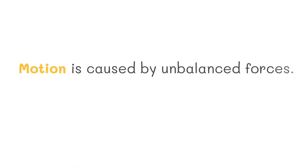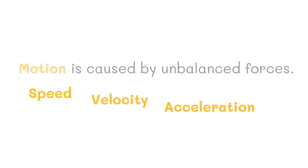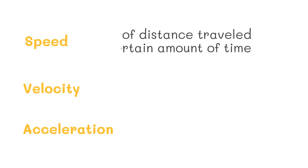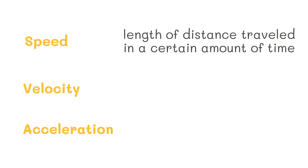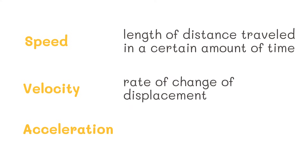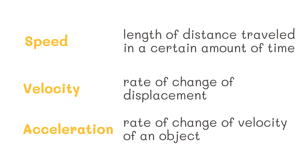Now let's talk about motion. Motion is caused by unbalanced forces and can be described with the following aspects: speed, velocity, and acceleration. Speed is the length of distance traveled in a certain amount of time, while velocity is the rate of change of displacement of an object, and acceleration is the rate of change of velocity of an object. Sounds confusing? Let me give you an example.